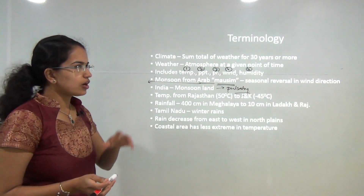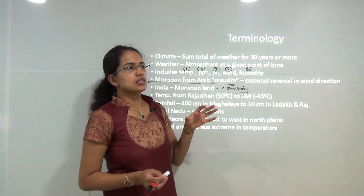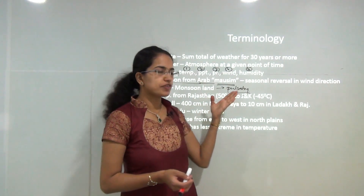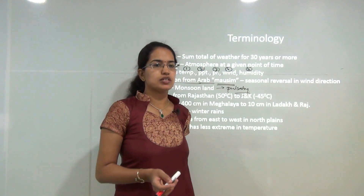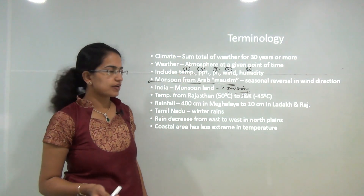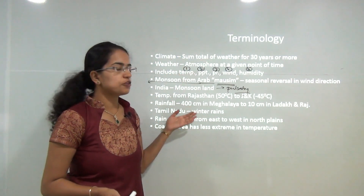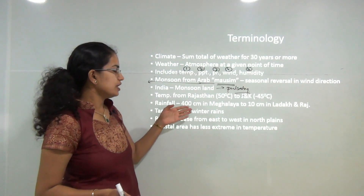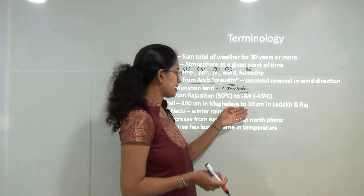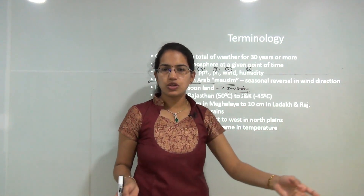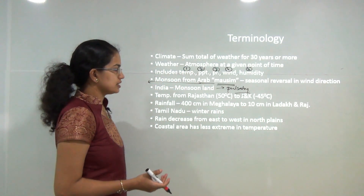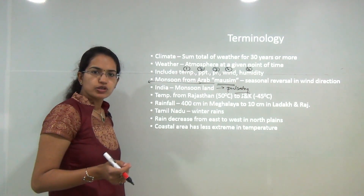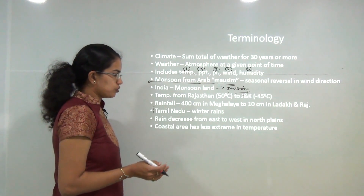There are extremes of climate: Rajasthan can reach a high of 50 degrees Celsius, in contrast to Jammu and Kashmir where it can go as low as minus 45 degrees Celsius. There are also extremes in rainfall — Meghalaya receives 400 centimeters, in contrast to Ladakh, a cold desert with merely 10 centimeters. Tamil Nadu is known for winter rainfalls.